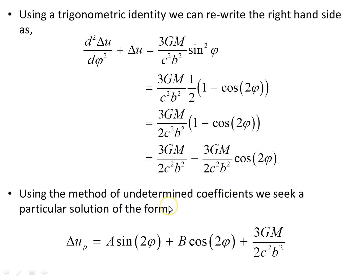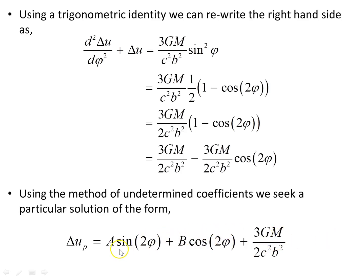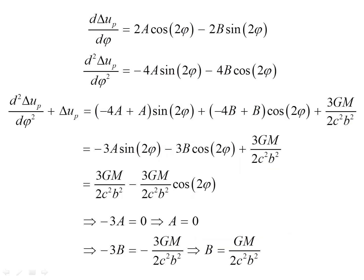Using the method of undetermined coefficients, we now seek a particular solution. We already found the homogeneous solution (sin(φ)/B). Since this is a non-homogeneous second-order differential equation — with a non-zero term on the right — we seek a particular solution. The total solution will be the homogeneous part plus the particular part. The right-hand side has trigonometric terms and a constant, so the general form for the particular solution is expanded in terms of A·sin(2φ) + B·cos(2φ) plus a constant term.